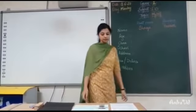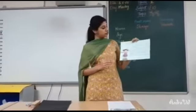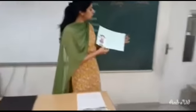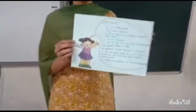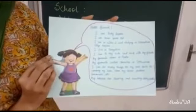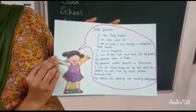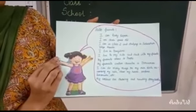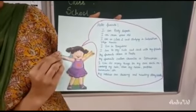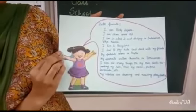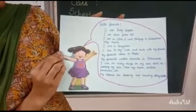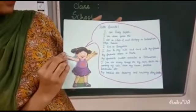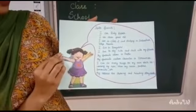Now let us see the chart here, where the girl Rinki talks about herself. She is introducing herself to her friends. She says: 'Hello friends, I am Rinki Kapoor. I am 7 years old. I am in Class 2 and studying in Sudarshan Vidya Mandir. I live in Bangalore. I love to play hide and seek with my friends. My favourite colour is purple. My favourite cartoon character is Doraemon. I can do many things on my own such as combing my hair, cleaning my room, preparing lemonade, etc. My hobbies are drawing and reading storybooks.'